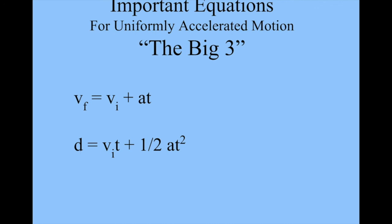The last is a little trickier to manipulate, but it's velocity final squared equals velocity initial squared plus 2 times the acceleration times the distance or the displacement.